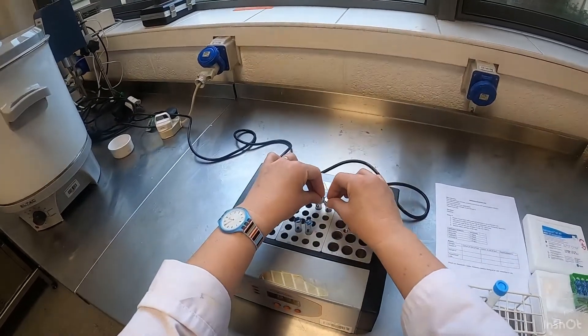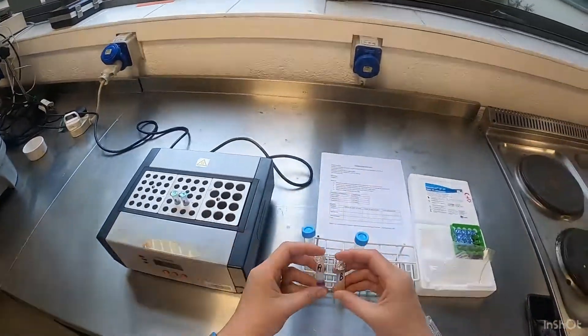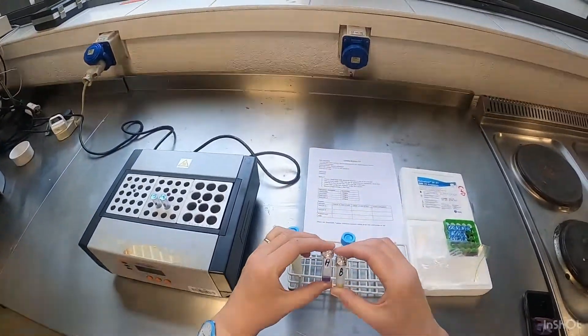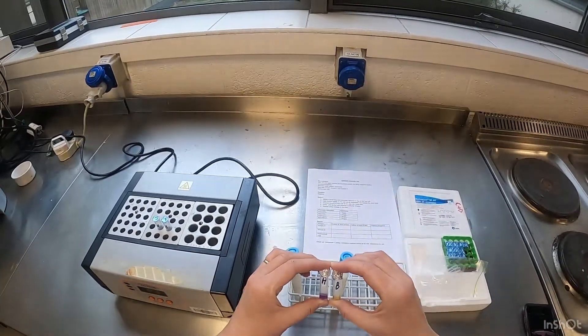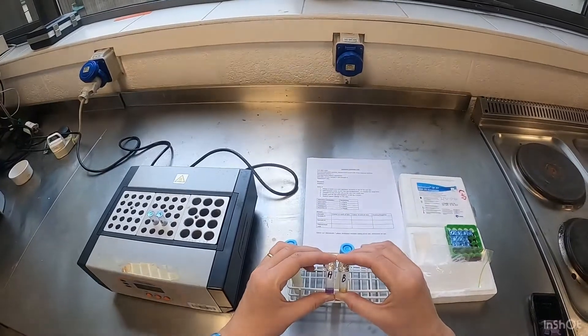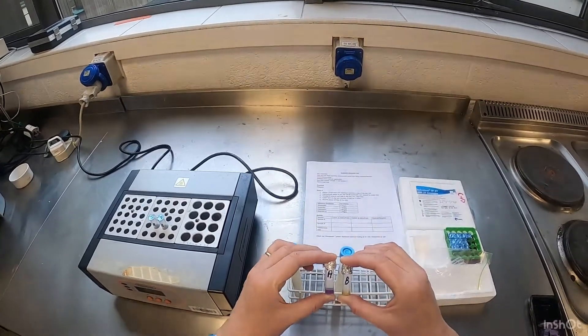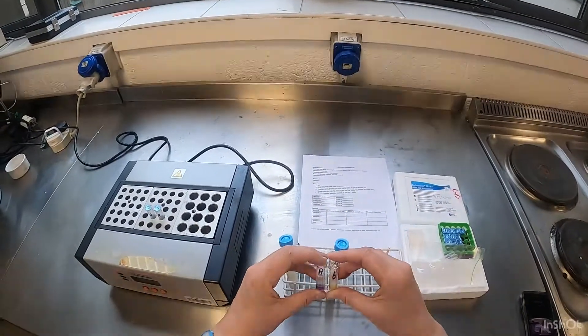Two samples I had previously prepared. You can see we have sample A and sample B. Sample A has remained purple and sample B has turned a yellow colour. I'll put together a worksheet and you can have a look to see which one of these is positive and which one of these is negative for antibiotics.